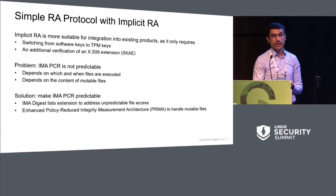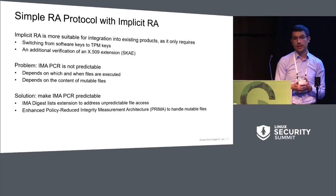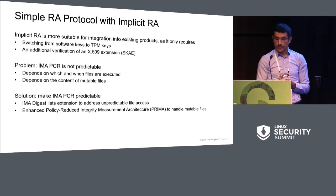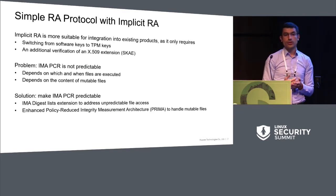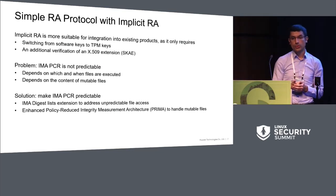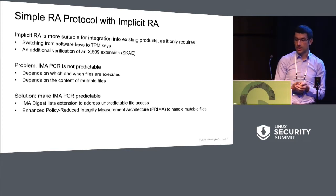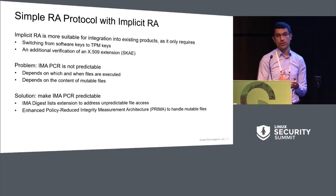The problem is that the IMA PCR is not predictable, because the final value of the PCR depends on which files have been measured and also the temporal sequence. Our solution is to implement implicit remote attestation, and to do this, we have to make the IMA PCR predictable. To do this, we have two new concepts: one called the IMA digest list, and the second is an enhanced version of policy in the reduced integrity measurement architecture to handle multiple files.